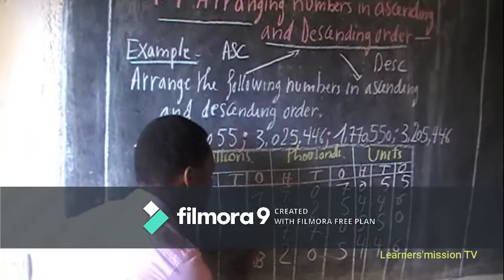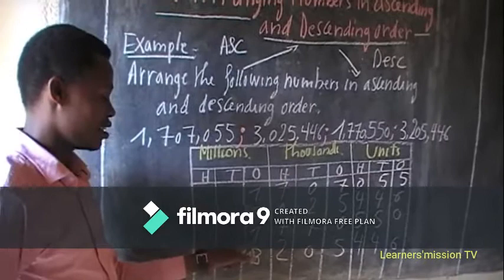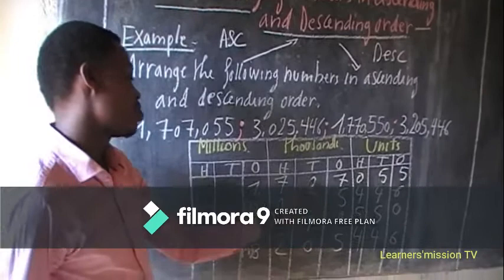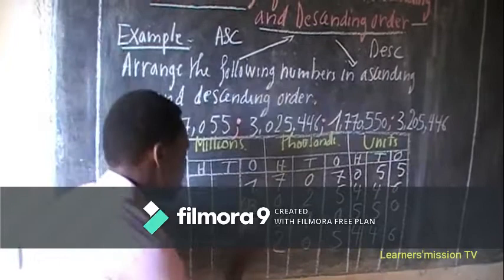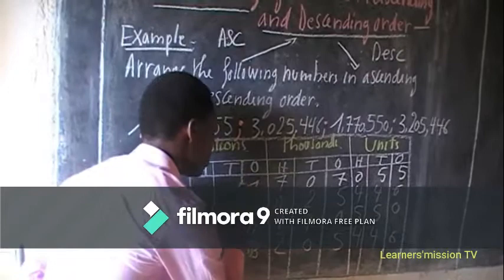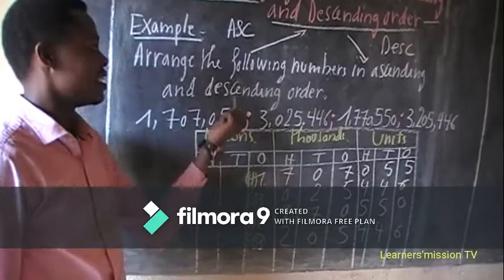The second one is this one. Then one, one — seventy, seventy, zero, seventy — this is the next, third. Then the last one is this one, the fourth number.